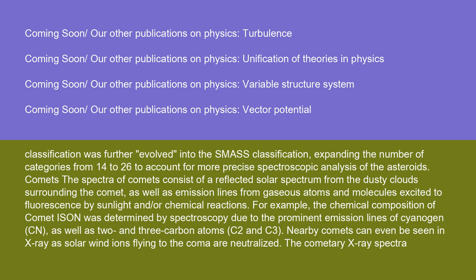The spectra of comets consist of a reflected solar spectrum from the dusty clouds surrounding the comet, as well as emission lines from gaseous atoms and molecules excited to fluorescence by sunlight and/or chemical reactions. For example, the chemical composition of comet Ikeya-Seki was determined by spectroscopy due to the prominent emission lines of cyanogen (CN), as well as two and three carbon atoms (C₂ and C₃). Nearby comets can even be seen in X-ray as solar wind ions flying into the coma are neutralized.